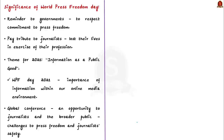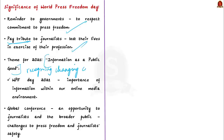World Press Freedom Day acts as a reminder to governments regarding the need to respect their commitment to press freedom. It is also a day of reflection among media professionals about press freedom and professional ethics, and a day to pay tribute to journalists who have lost their lives in the exercise of their profession. The theme for 2021 is 'Information as a Public Good', affirming the importance of cherishing information as a public good, recognizing the changing communication system impacting our health systems, human rights, democracies, and sustainable development.